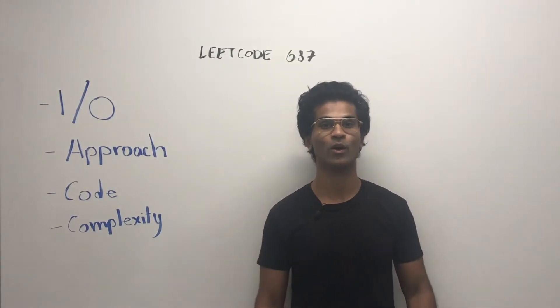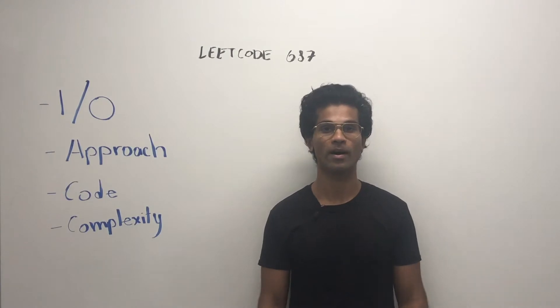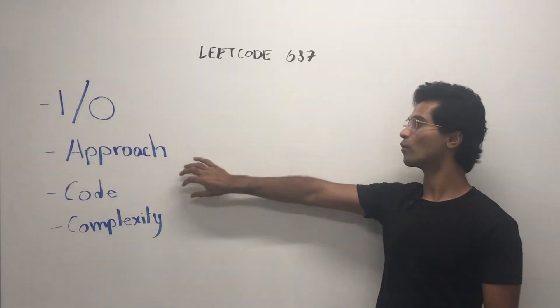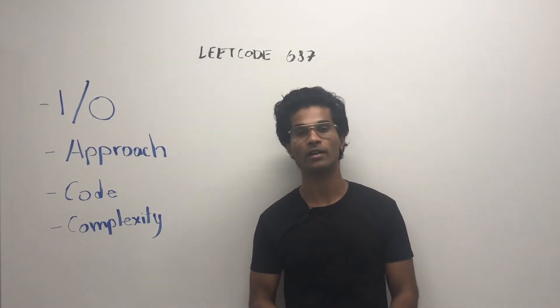What's up everyone, today we're going to go over LeetCode 687, longest univalue path. First we're going to go over the input and output, then we'll go over the approach, then the code, and finally the complexity.